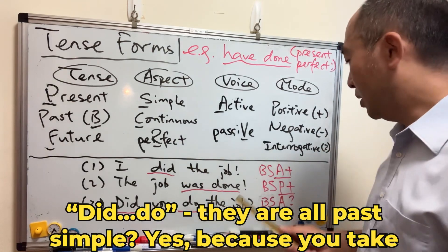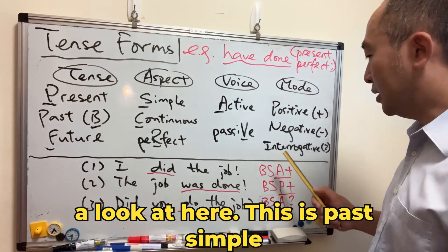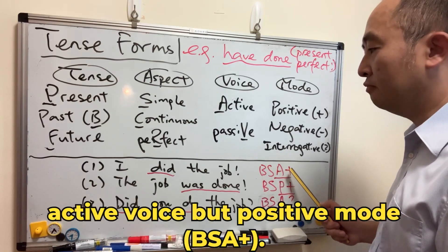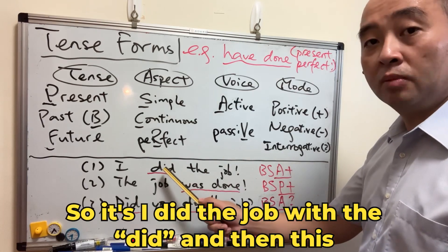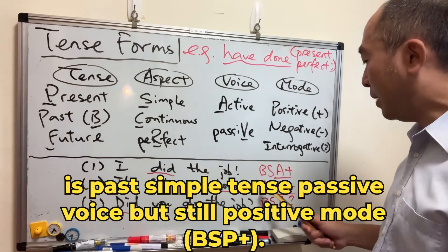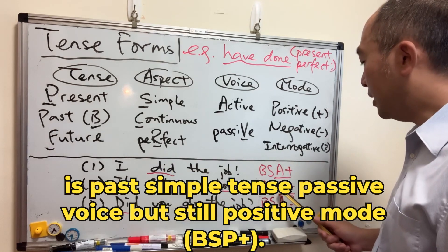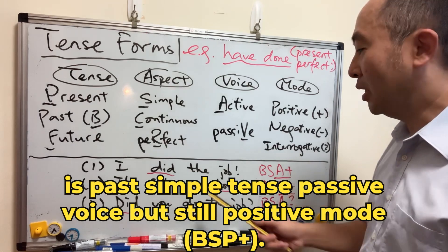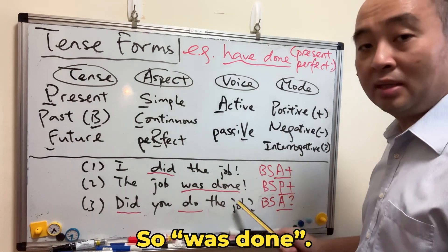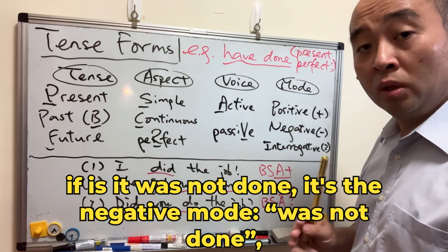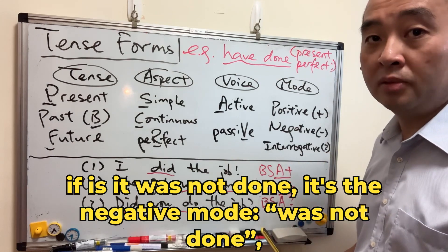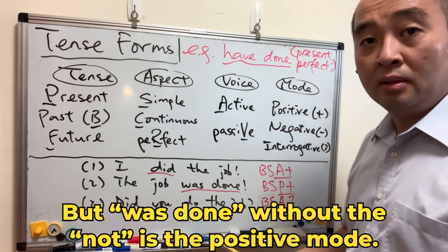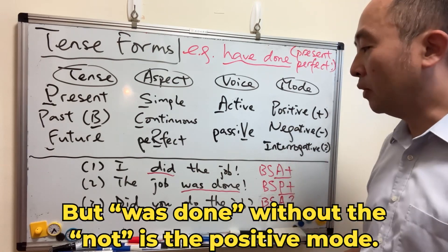Yes, because if you take a look here: 'I did the job' is past simple, active voice, positive mode. 'The job was done' is past simple, passive voice, still positive mode. If it was 'not done,' that's the negative mode — so 'was not done' is different, but 'was done' without the 'not' is the positive mode.